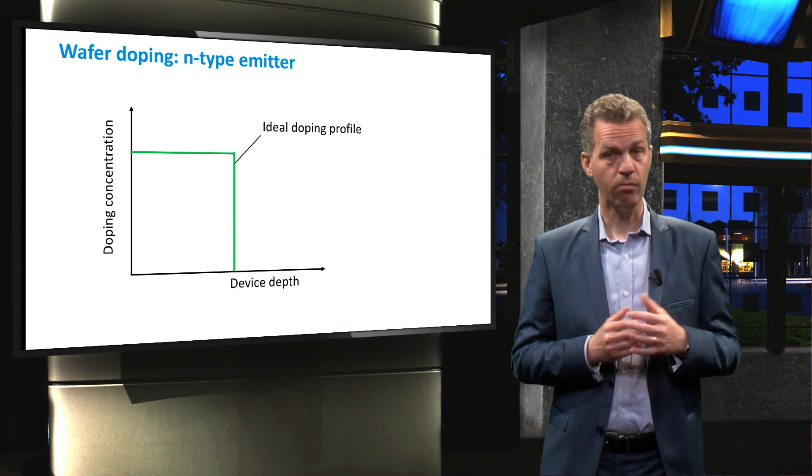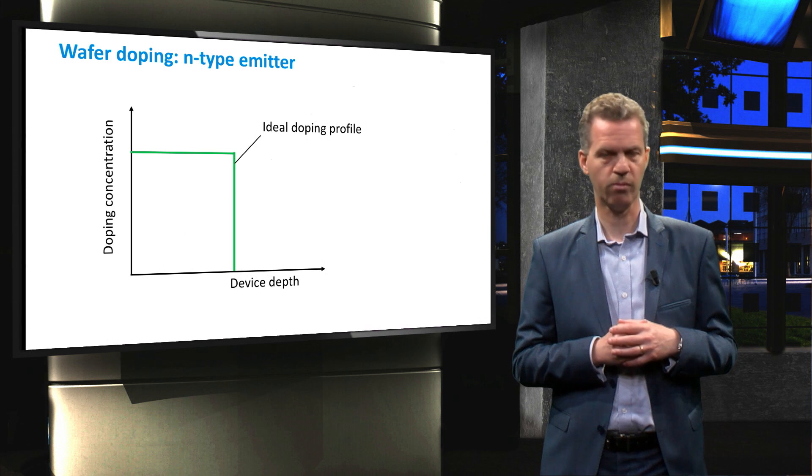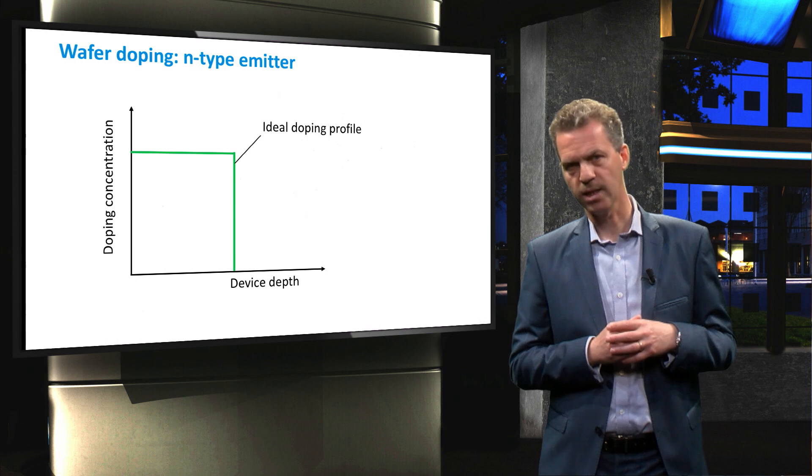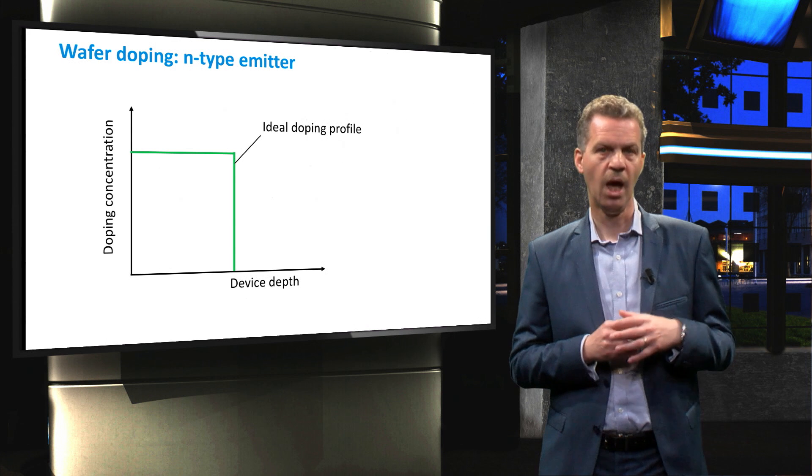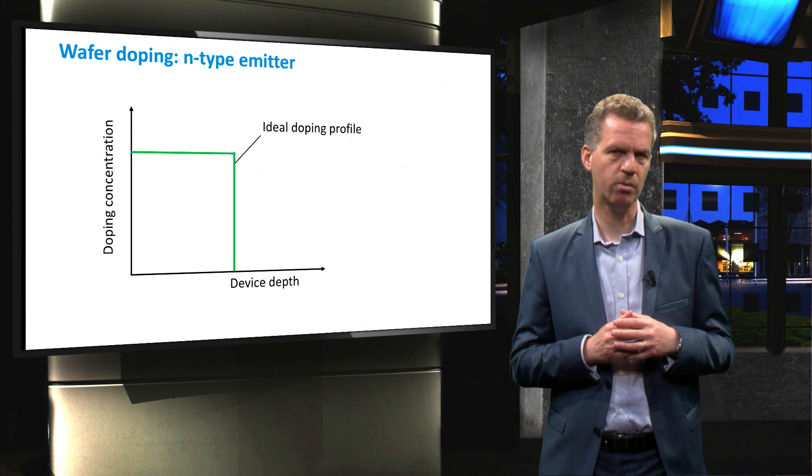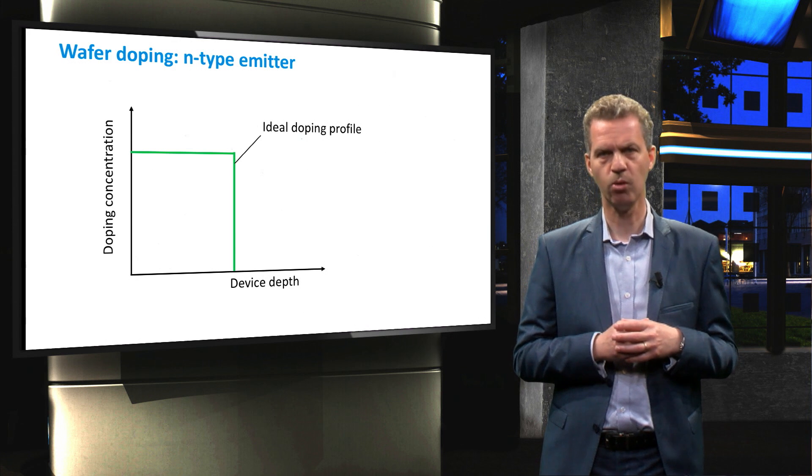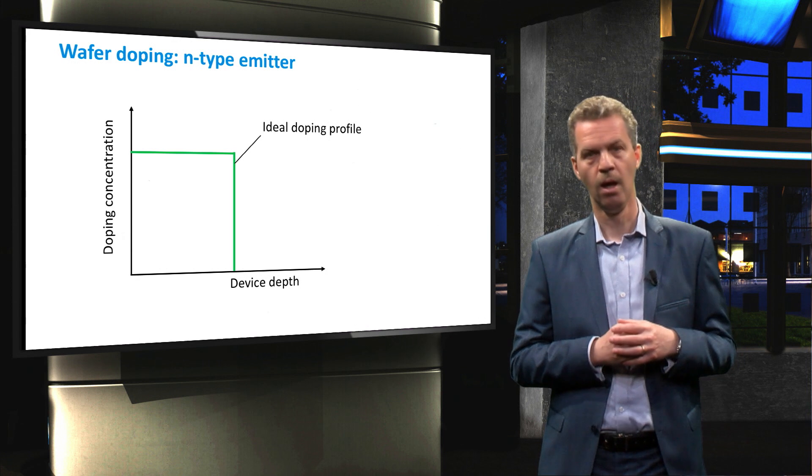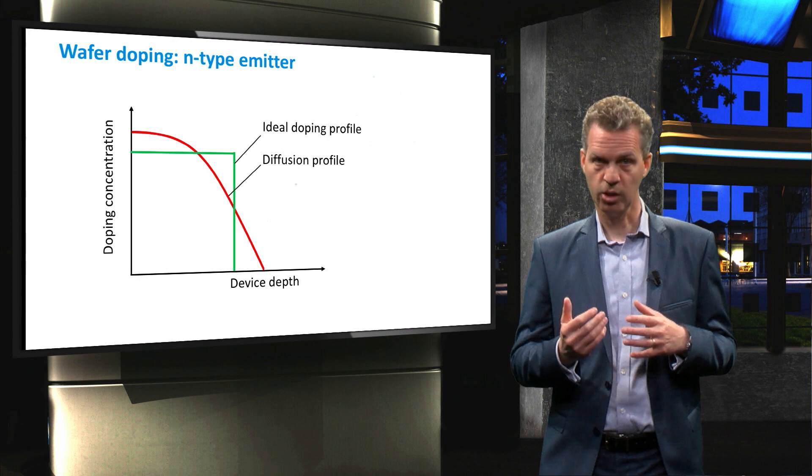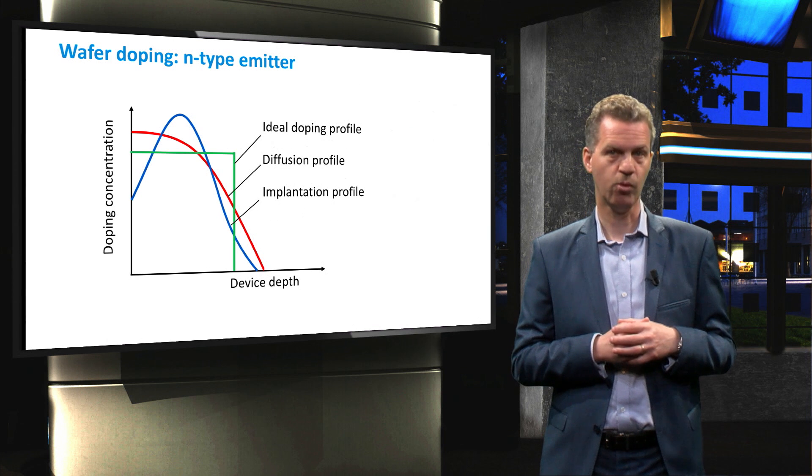We will now briefly discuss the doping profiles obtained using the discussed emitter doping processes. The doping profile of a typical p-n junction is not as ideal as presented in previous videos. It is virtually impossible to obtain a perfect boundary between the p- and n-type material, and in reality this profile will change more gradually from p- to n-type. There is, however, a difference in doping profile obtained by solid-state diffusion or by ion implantation, as is pointed out in this graph.